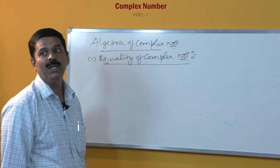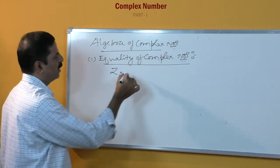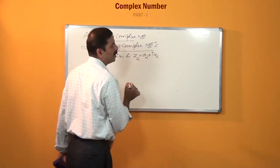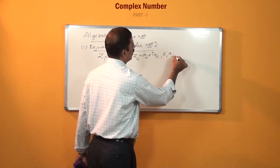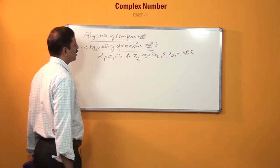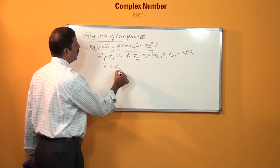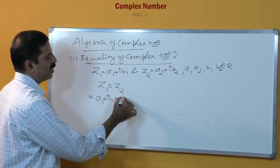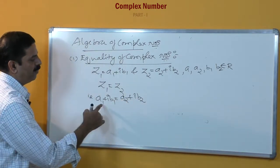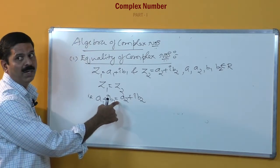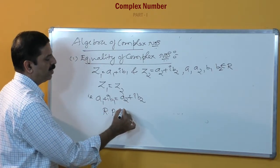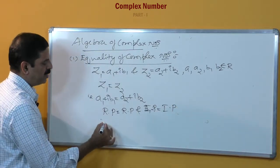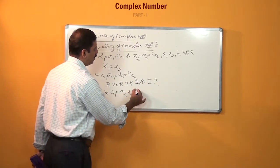When are two complex numbers said to be equal? Suppose z1 equals a1 plus i b1, and z2 equals a2 plus i b2, where a1, a2, b1, b2 are all real numbers. Then z1 equals z2 only when the real part equals the real part and the imaginary part equals the imaginary part — that is, a1 equals a2 and b1 equals b2.